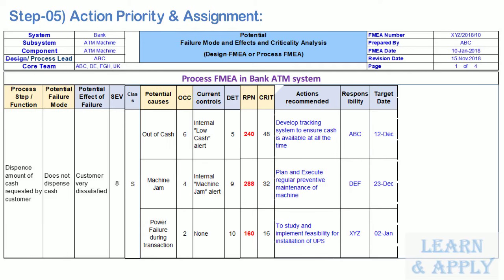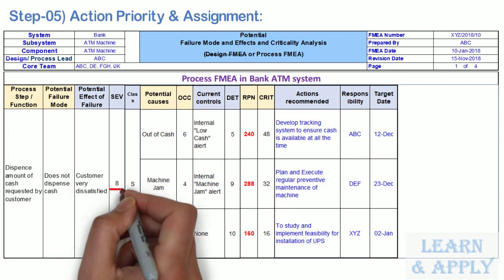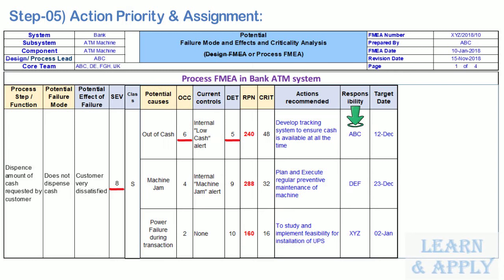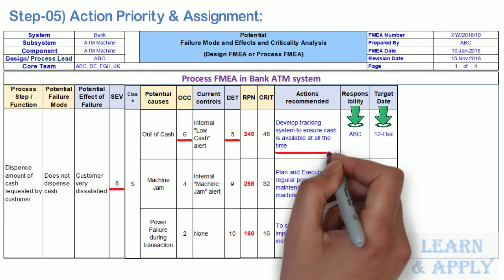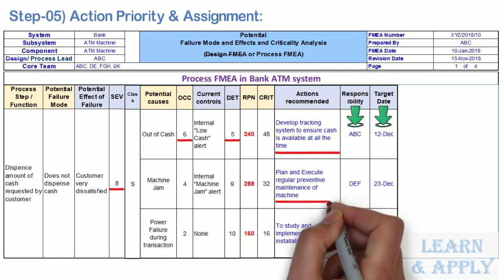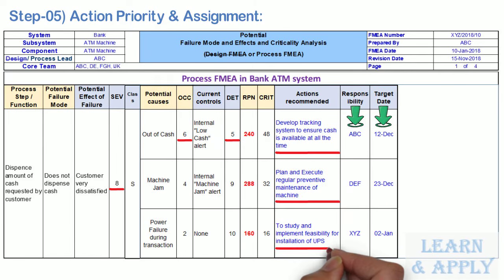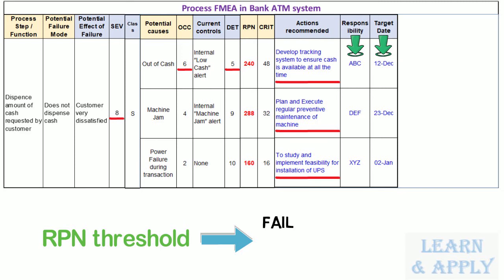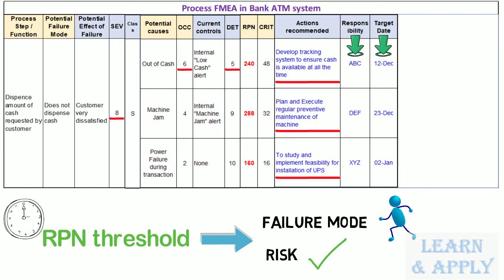Identify recommended actions based on the priority score. These actions may be design or process changes to lower severity or occurrence, or additional controls to improve detection. Also note who is responsible for the actions and target completion dates. In our ATM example, the actions are: (1) develop a tracking system to ensure cash is available at all times, (2) plan and execute regular preventive maintenance of the machine, and (3) study and implement feasibility for installation of UPS. Many organizations use an RPN threshold to determine which failure modes require corrective action. However, using an RPN threshold may cause team members to spend excessive time reducing detection, occurrence, and severity rankings, which can sometimes place the organization and its customers in danger.